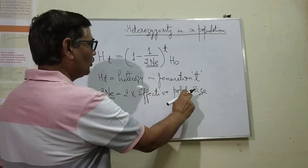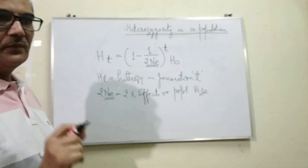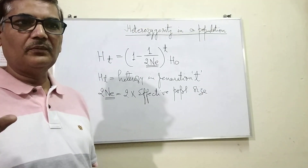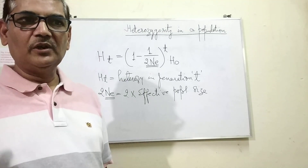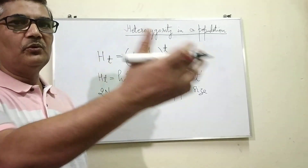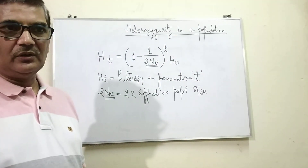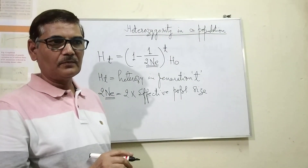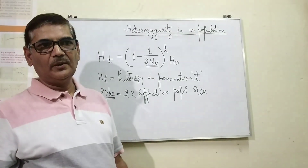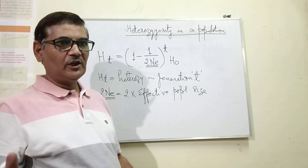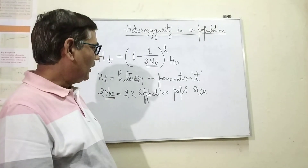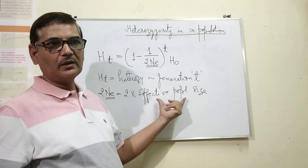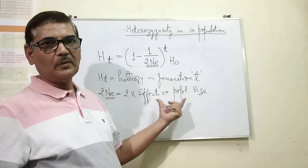What is effective population size? Effective population size refers to the number of reproductively mature individuals who are contributing to the next generation. So, males and females in a sexually reproducing population which are involved in reproduction and produce progeny for the next generation are considered to make up the effective population size.